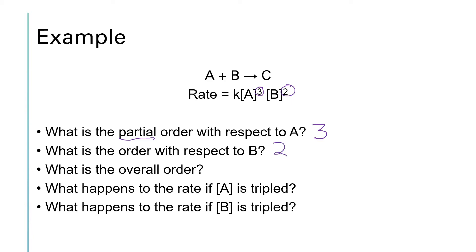Then it asks, what is the overall order? Well, we get the overall order by adding up all of the partial orders. So that will be a three plus a two, which gives us an overall order of five.